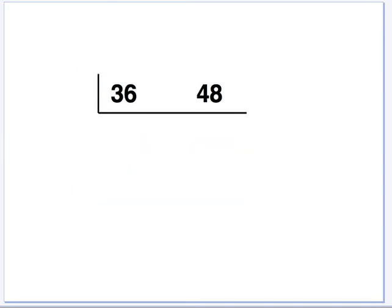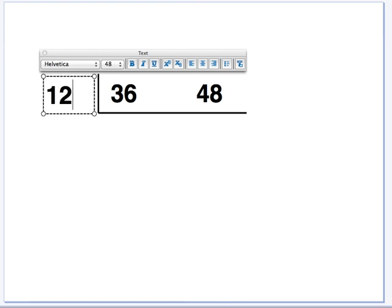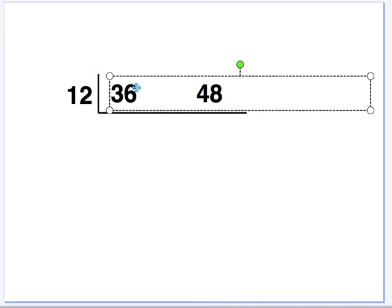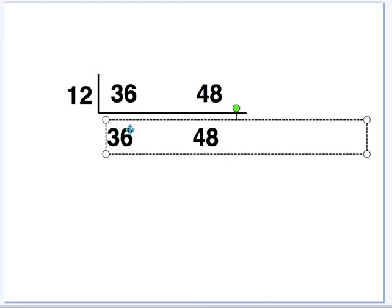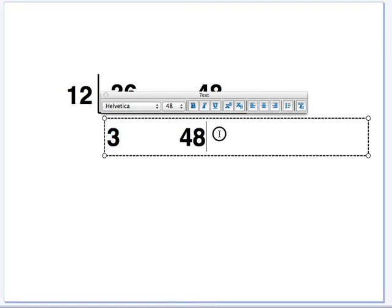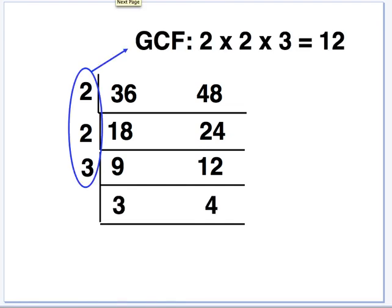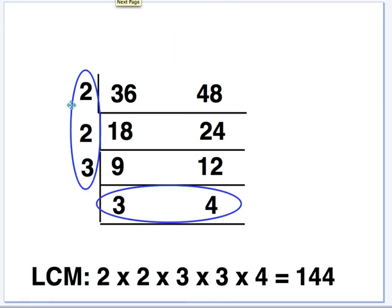Given this point right here, you could say, well, what number divides evenly into both 36 and 48? Well, 12 does. And you know that 12 divides in 3 times and 4 times. So you could skip right down to that step if you wanted to. Same process for the LCM. You take whatever's on the left-hand side, you multiply all of those numbers together, and you multiply by the remaining two numbers at the bottom. So it's 2 times 2 times 3 times 3 times 4, which is 144.